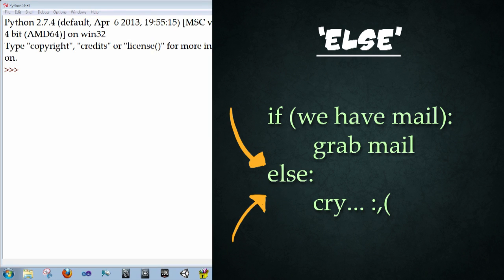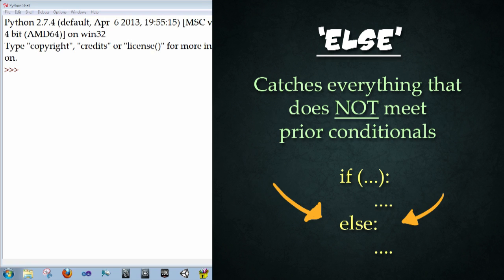What works great with the if statement is the else statement. Else is a catch-all for anything that gets passed by the if statement or doesn't meet the criteria to make the statement true. So for example, if I breathe, I'm alive. If I don't, I'm super dead.